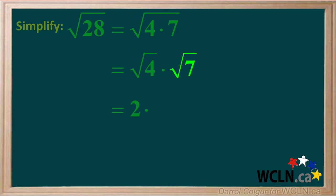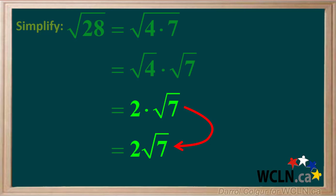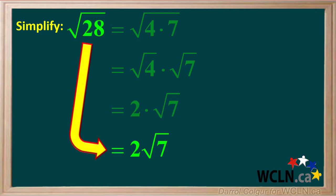7 is a prime factor, so just bring down the square root of 7. So you're left with 2 times the square root of 7, which you can compact to 2 root 7. To summarize, the square root of 28 can be simplified to 2 root 7.